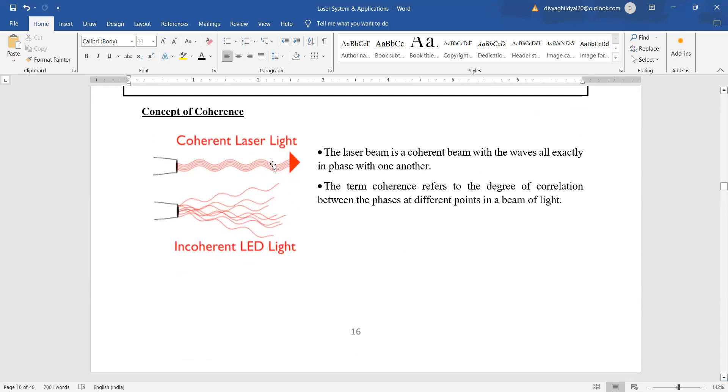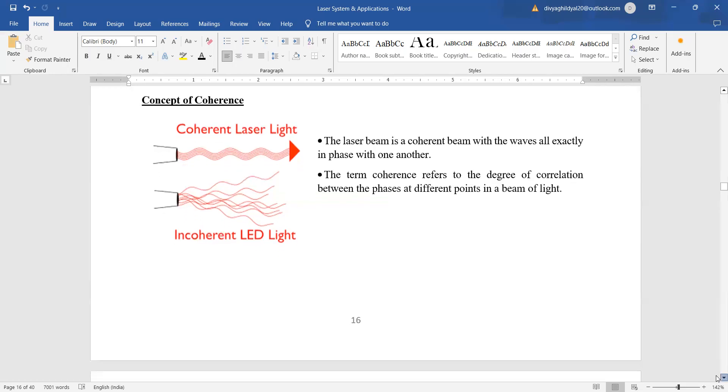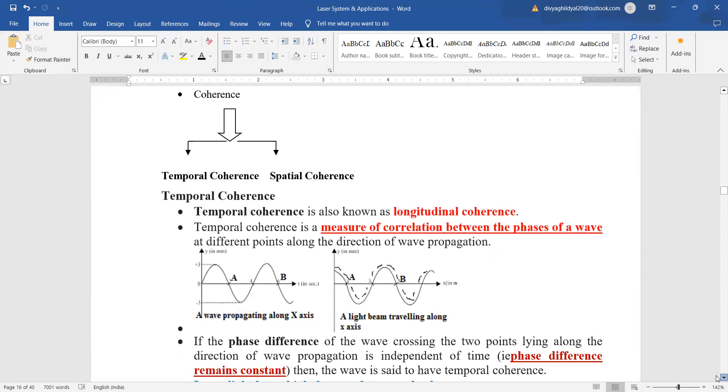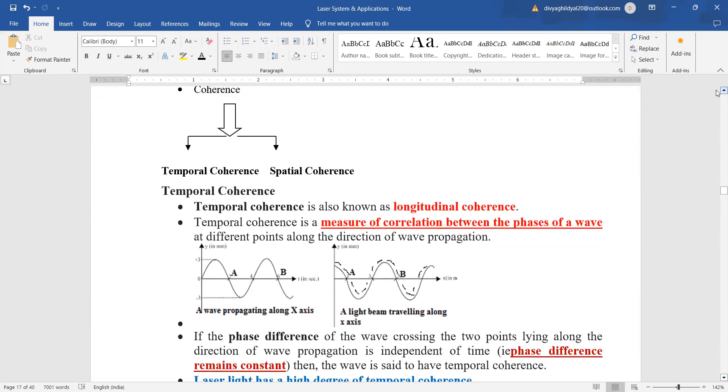What is coherence? Now look at this diagram. This light is not coherent. It is incoherent spreading in all directions but this is a coherent laser light. So all the waves will be exactly in phase with one another and coherence basically refers to the degree of correlation between the phases at different points in a beam of light. Now coherence are of two types temporal and spatial. Very very important. Temporal coherence and spatial coherence. See temporal coherence, this is also known as longitudinal coherence and spatial coherence is known as transverse coherence.